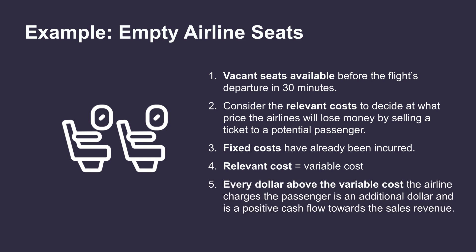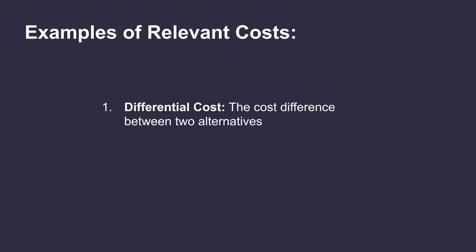Every dollar above the variable cost Delta charges the passenger is an additional dollar of positive revenue. Some examples of relevant costs are differential costs — the total cost incurred due to the production of every additional unit. In the example above, the additional cost of the food and drinks for the passenger is the incremental cost.